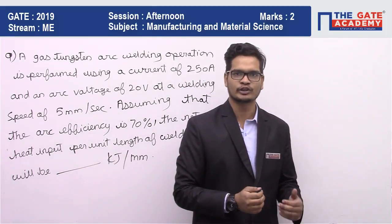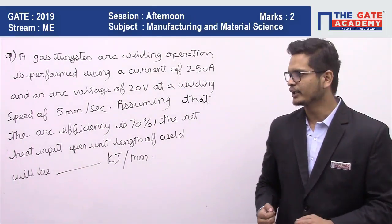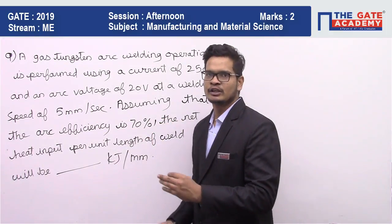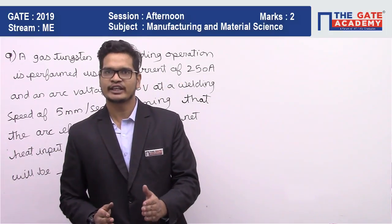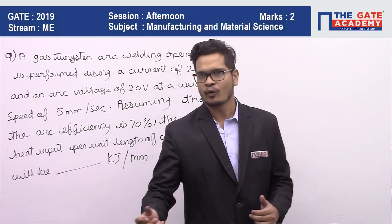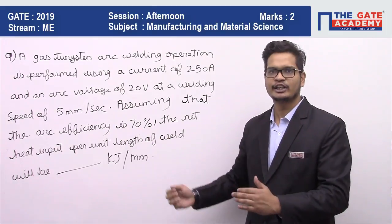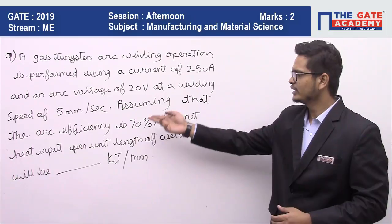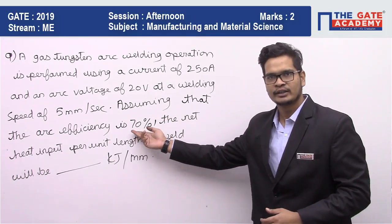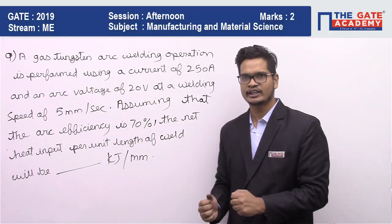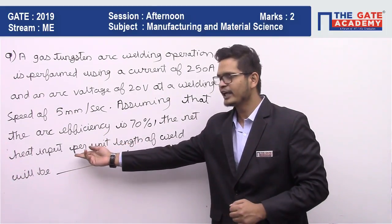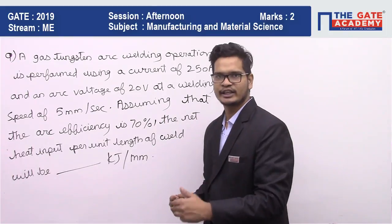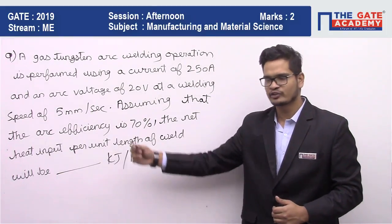They have given us current and voltage, so heat input we can find as the power supply, which is V into I. They have given us arc efficiency of 70%, meaning whatever power we are supplying, that entire power is not reaching the weld — only 70% is reaching and 30% is being lost. So the heat supplied is total power into 0.7. From there we find heat supply, then divide by the velocity to get heat input per unit length.